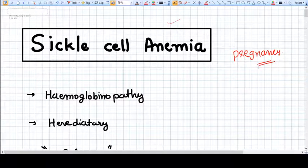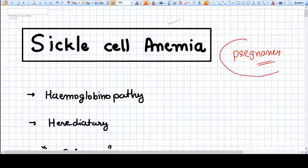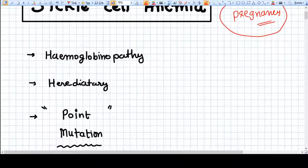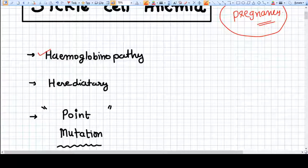Hello everyone, in this video we are going to talk about sickle cell anemia in context to pregnancy. But before that, we need to understand what is the basic pathophysiology behind sickle cell anemia, then only we can treat it. So we all know this is a type of hemoglobinopathy and it is hereditary, it is genetic.